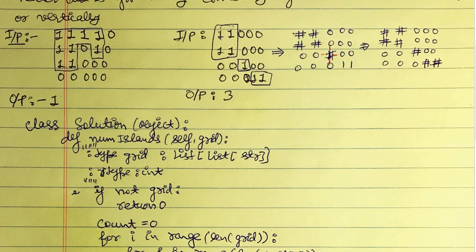After replacing a cell with the pound sign, we check the neighborhood of that point — one step left, one step right, one step down, and one step up. If we are near the edge of the grid we don't perform those replacements. If we find a one in the neighborhood, we also flip those ones to the pound sign, indicating they all constitute just one island.